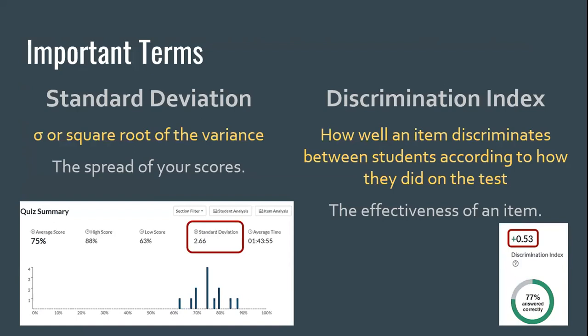Additionally on the quiz summary page, Canvas gives us the discrimination index — how well an item discriminates between students according to how they did on the test overall. It's really the effectiveness of an item. For students who scored high overall, did they get this question right? Did it differentiate between students who did well and those who didn't? We're looking for the discrimination index to be over 0.24. Canvas has a QA mechanism: if it's 0.24 or below, it'll appear in red; if it's 0.25 or above, it'll be in black. This is a point-biserial correlation between the answer being correct/incorrect and the overall test score.